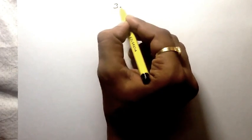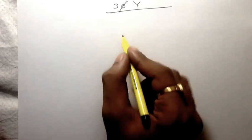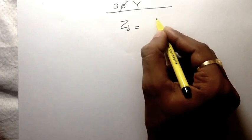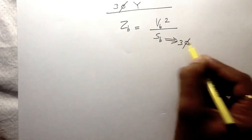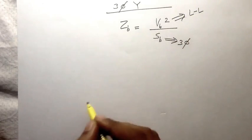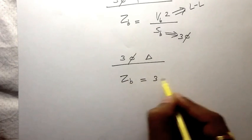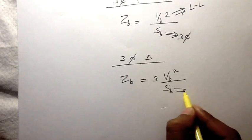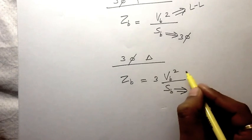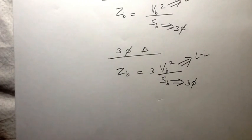In the three-phase star-connected system, the base impedance equals the base voltage squared divided by the base power, where the base power is the three-phase base power and the base voltage is the line-to-line voltage. In the three-phase delta-connected system, the base impedance is given as 3 times V_base squared divided by S_base, where S_base is the three-phase base power and V_base is the line-to-line voltage. These two formulas are very important in understanding power system analysis.